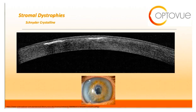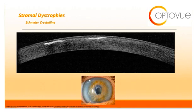The last stromal dystrophy I will discuss is central crystalline dystrophy of Schneider. This appears clinically as fine yellow-white anterior stromal crystals located in the central cornea. On OCT, you will see dense hyper-reflective tissue more visible in the anterior stroma, with the epithelium and Bowman's membrane being spared.